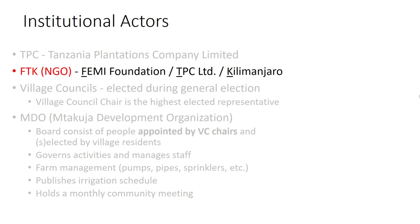It took them two years to convince the community to set up the farm, because the 120 to 200 acres for the farm meant that some people would have to give up land. Essentially, community land was not sufficient for this size farm and it wouldn't have been worth it otherwise. The Tanzania Plantations Company is the second largest sugarcane farm in the region. Through their corporate social responsibility, they fund some of the work of FTK and provide employment for people in the community.